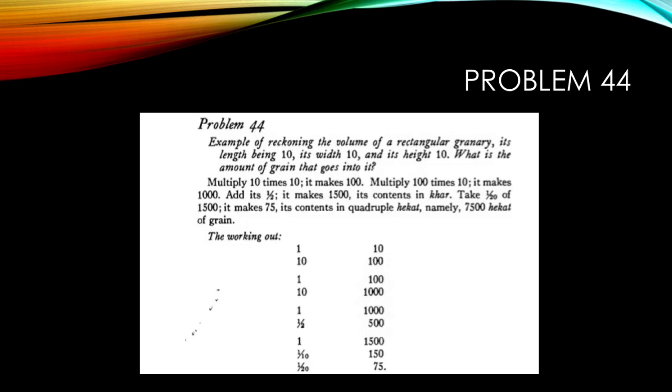First thing they do is make a multiplication of the width and the length which gives you the area of the square on top. That's a hundred. Then you multiply by the height. It gives you a thousand.